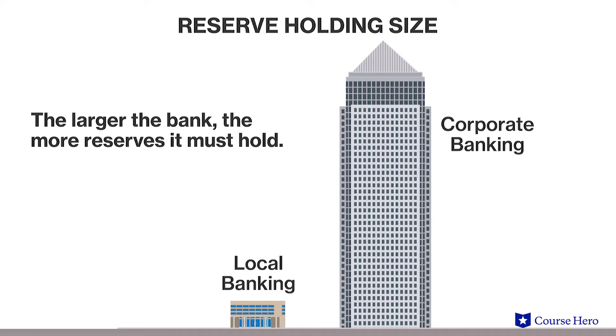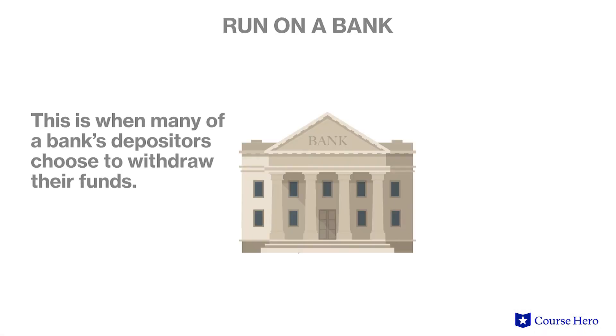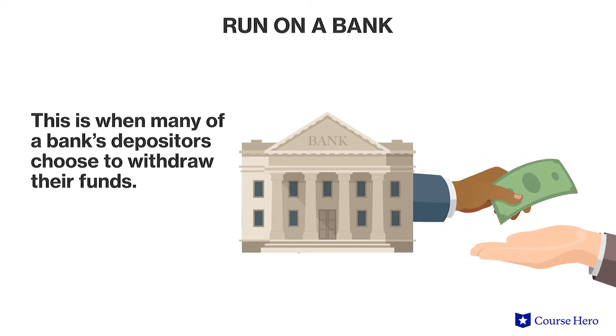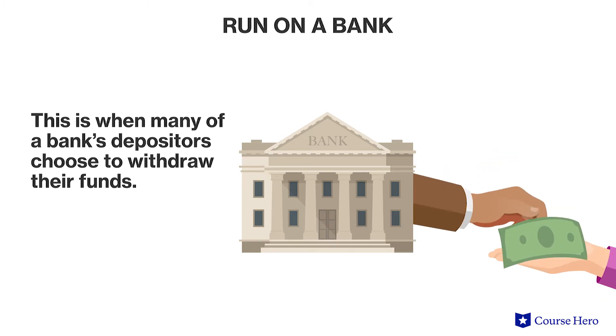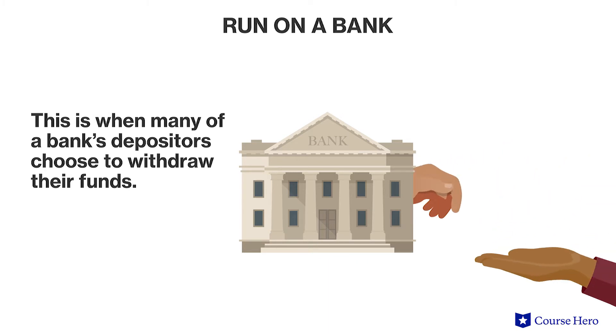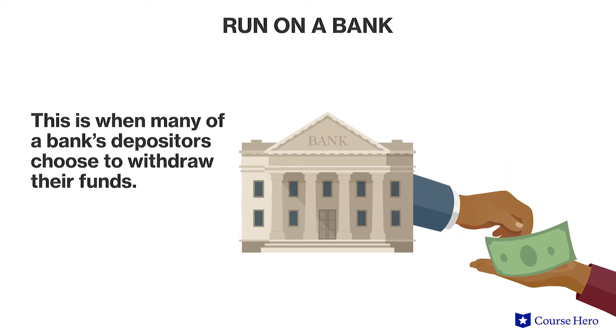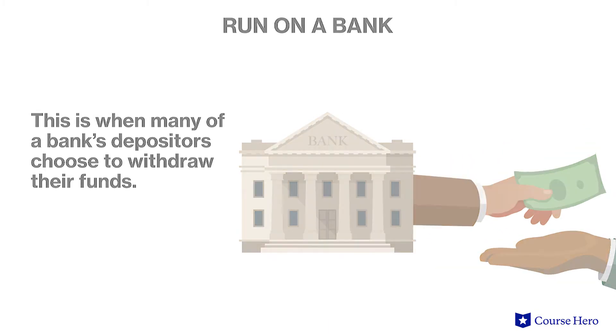The larger the bank, the more reserves it must hold, according to regulations created by the Federal Reserve. This regulation exists to discourage and impede a bank run. A run on a bank is when many depositors choose to withdraw their funds at the same time, often because of a perception of financial weakness, which then causes the weakness people feared. Bank runs were one of the most damaging aspects of the Great Depression in the 1930s.